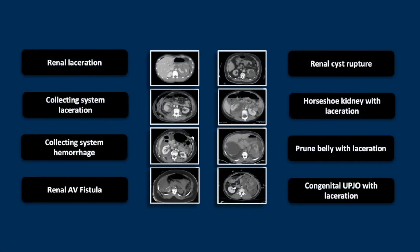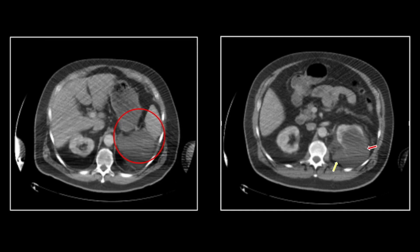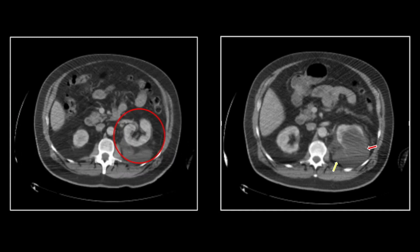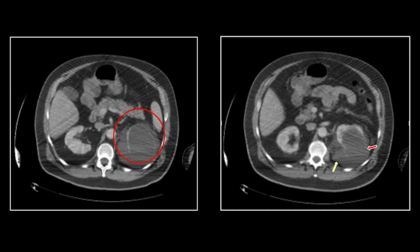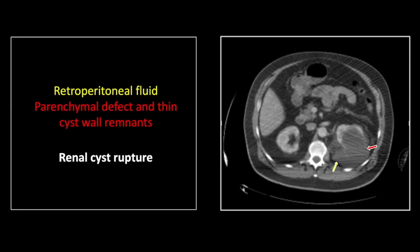Our next case is the traumatic rupture of a benign renal cyst. I'm actually surprised we don't see this more often given the frequency of renal cysts; however, it is a relatively unusual finding. You can see relatively hypodense fluid in the left perinephric space and the flaccid, collapsed thin wall of a benign renal cyst. You can see the collapsed walls of that cyst. That is a traumatic left renal cyst rupture.